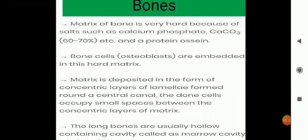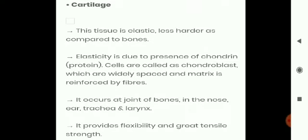The matrix is deposited in the form of concentric layers. Long bones are usually hollow, containing a cavity called the marrow cavity where bone marrow formation takes place. Cartilage provides flexibility and great tensile strength. It is a non-porous tissue with no nerves or blood vessels. Cartilage cells are present in fluid-filled spaces called lacunae. Cartilage is semi-transparent and elastic, and is present in the larynx, trachea, at the ends of bones, nasal septum, between ribs and sternum, at joints, and in the tip of the nose.